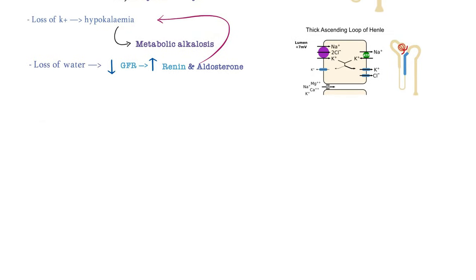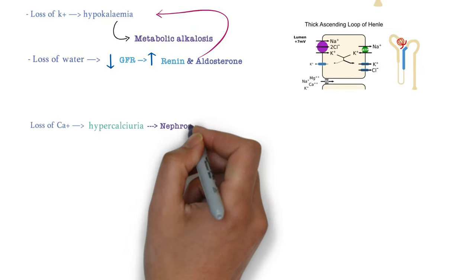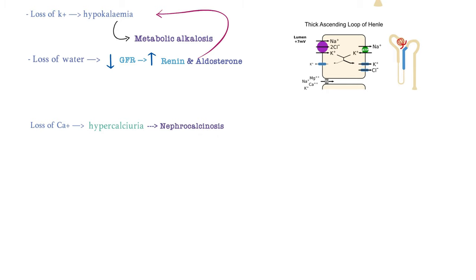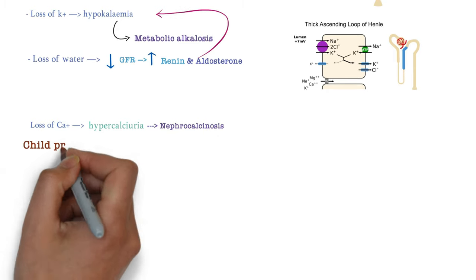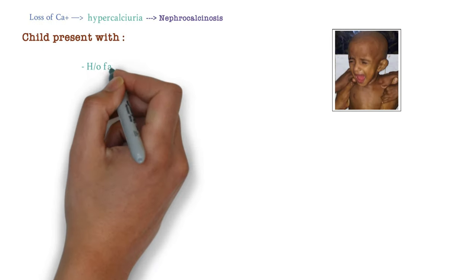Loss of calcium through urine, i.e. hypercalciuria, can lead to nephrocalcinosis in Bartter syndrome and thus child presents with the history of failure to thrive.